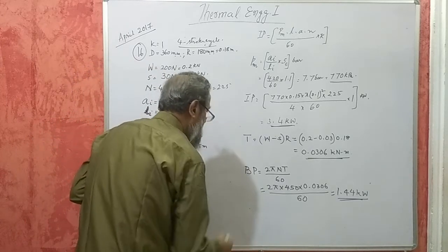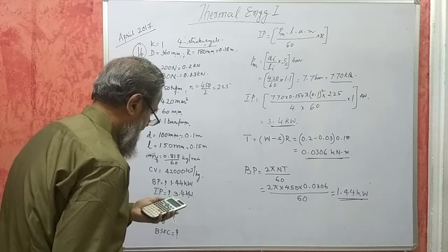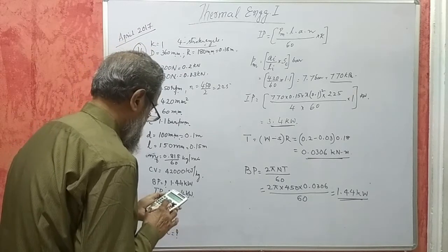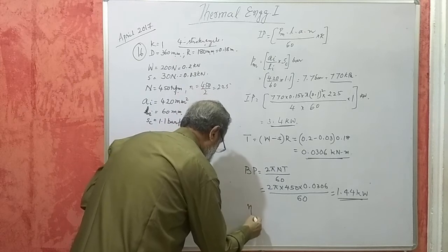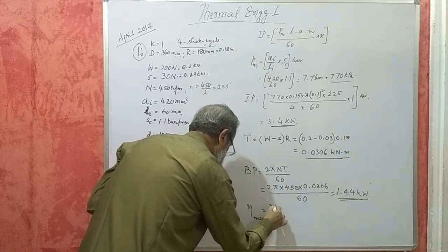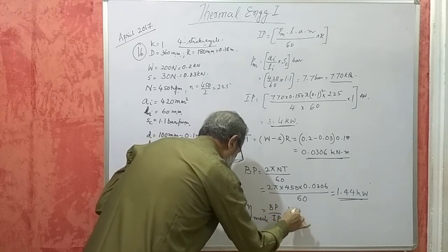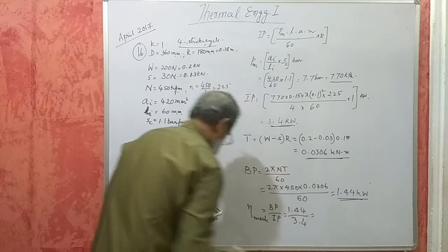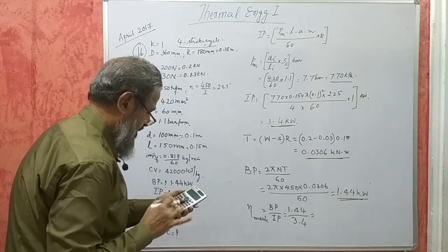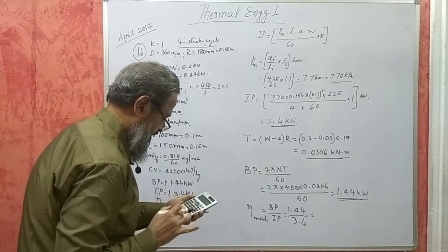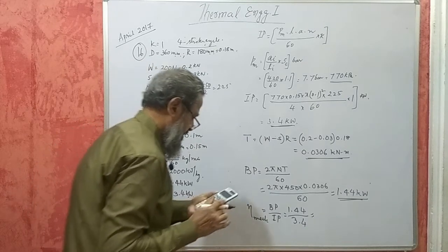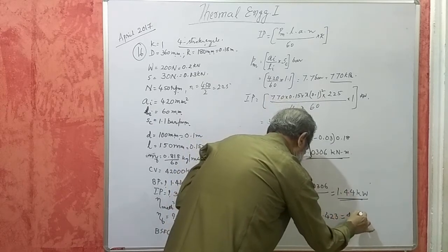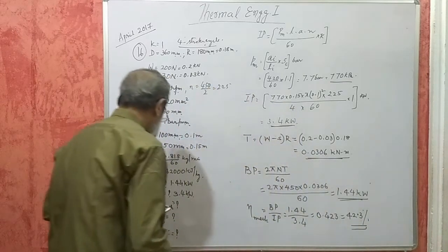Mechanical efficiency is BP by IP. 1.44 divided by 3.4, we get 0.423 or 42.3 percent.